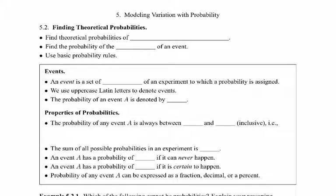In section 5.2, we're going to look at calculating theoretical probabilities, and that's mostly what we're going to work with for the rest of the chapter — looking at theoretical probabilities.